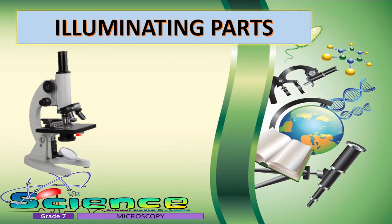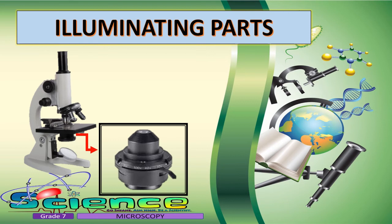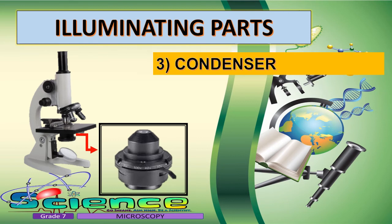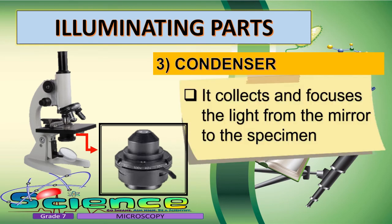Next is the condenser. It is also located under the stage. This part collects and focuses the light from the mirror onto the specimen.